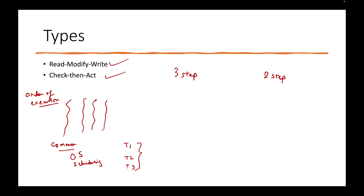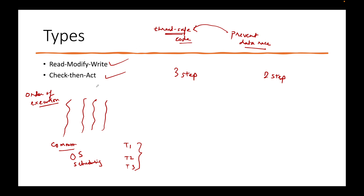The developer doesn't know which thread will move into the runnable state and when it will get priority. That is why it is the responsibility of the developer to write code that is thread-safe. We talk about thread safety so we can prevent data races. To prevent data races we don't want incorrect results, so we write thread-safe code. To write thread-safe code we need to understand how the data race happens.